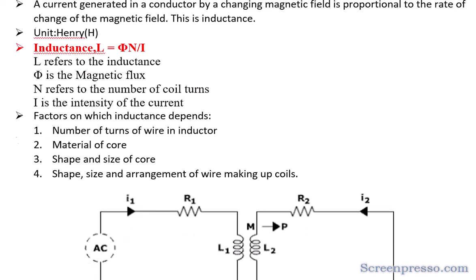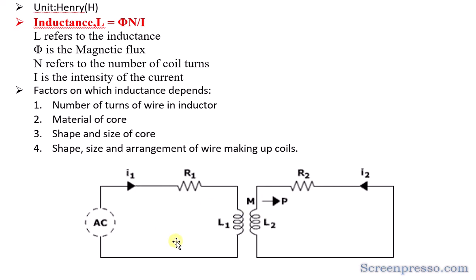For a diagrammatic representation, there are two inductors L1 and L2. Current i1 flows through the first circuit with resistance R1 and an AC source applied, and R2 is in the second circuit. L1 is the inductance of the first circuit and L2 is the inductance of the second circuit. The inductance generated within a single circuit is called self-inductance.